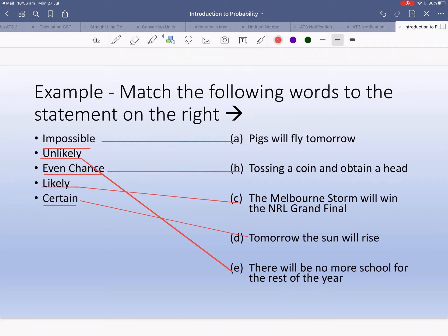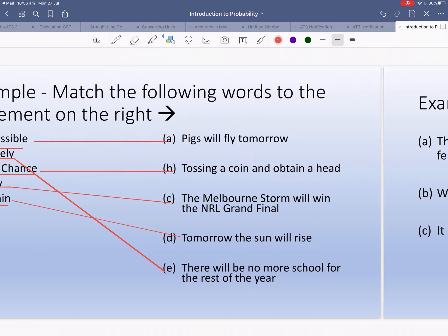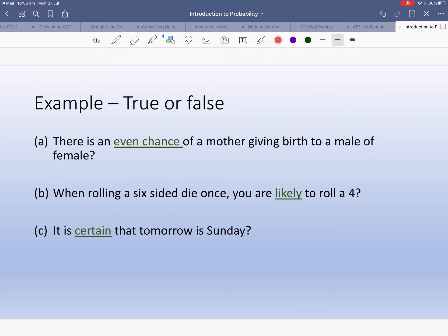True or false - we've got to answer true or false. I'm going to put a T for true and I'm going to put an F for false. There is an even chance of a mother giving birth to a male or female. Let's say one baby comes out, it'll be male or female. I think that's true.